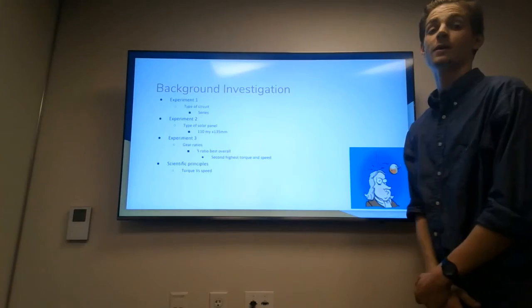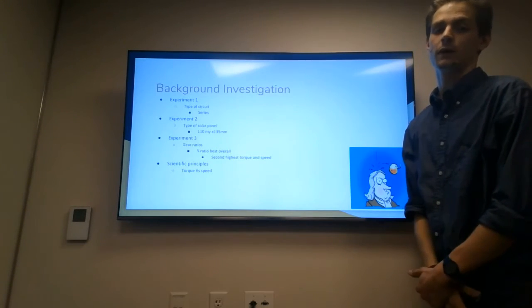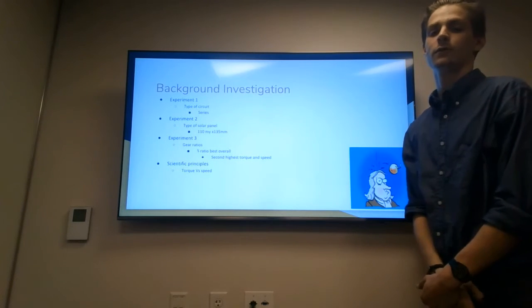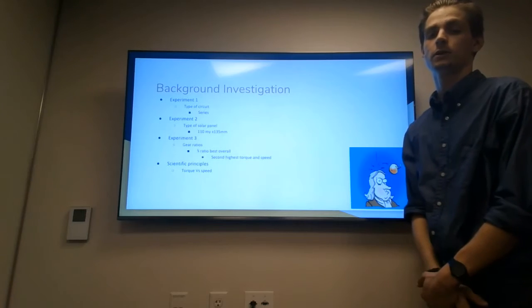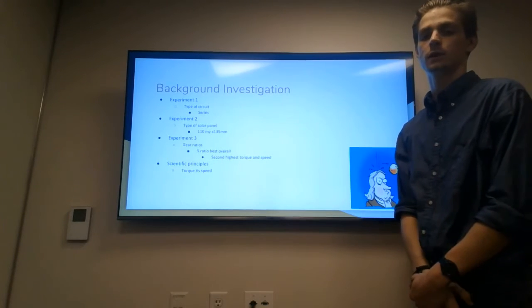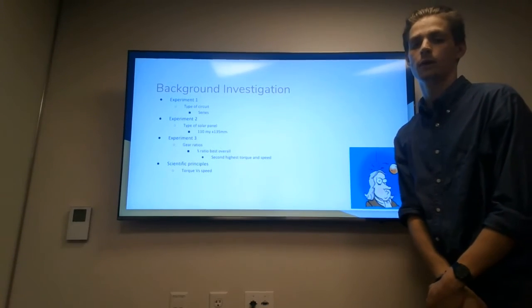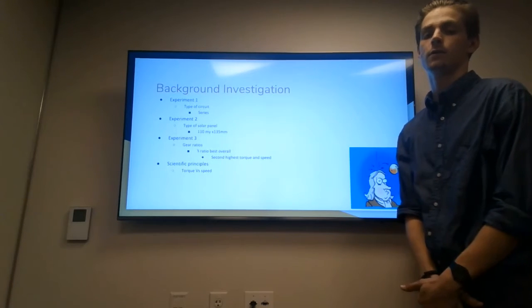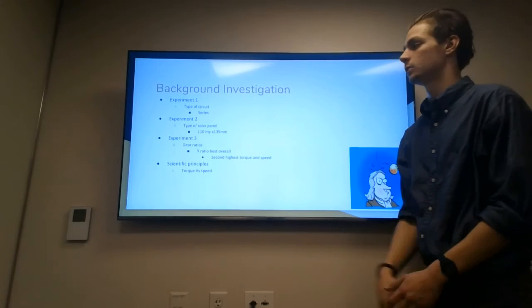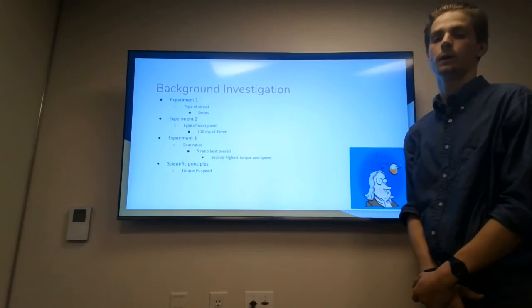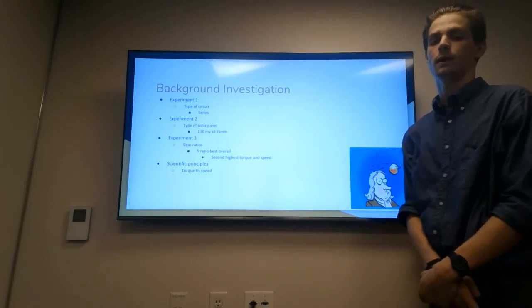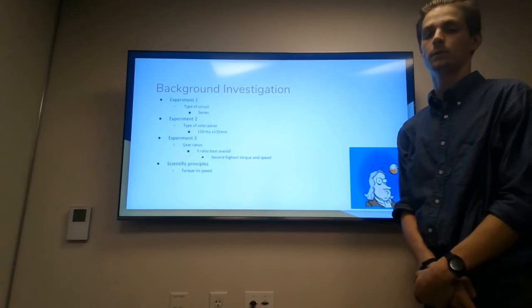To continue, we have more investigation into our background through three separate experiments. For the first experiment, we tested the type of circuit to use: parallel versus series versus a parallel-series circuit. Based on three trials for each, we found that a series circuit was the best, providing the most voltage and current, which would provide the most power. The second experiment tested the type of solar panel. After testing three separate solar panels, we found that a 110 millimeter by 135 millimeter solar panel provided the best power in voltage and current.